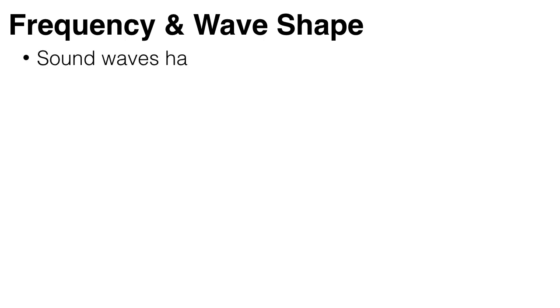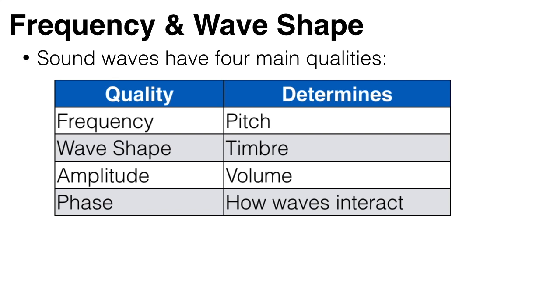Sound waves generally have four main qualities: a frequency, which determines the pitch of the note; a wave shape, which determines the timbre; an amplitude, which determines the volume; and a phase, which determines how sound waves interact.